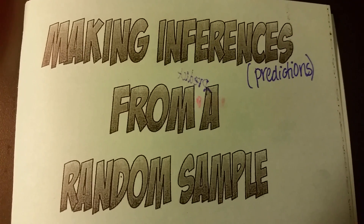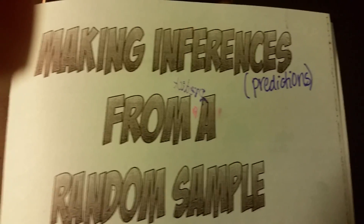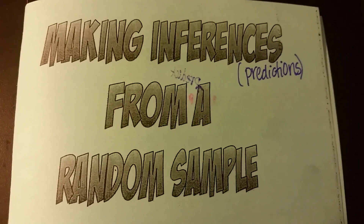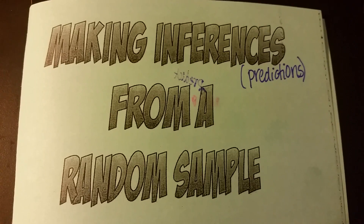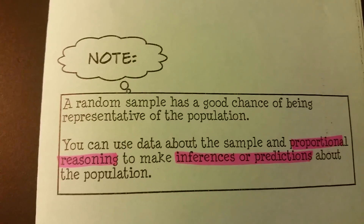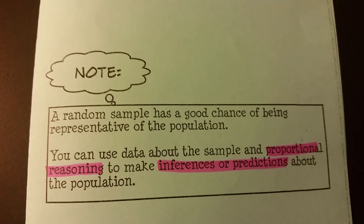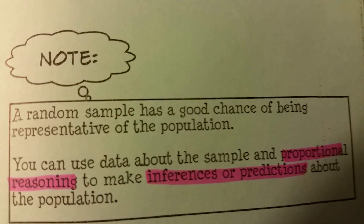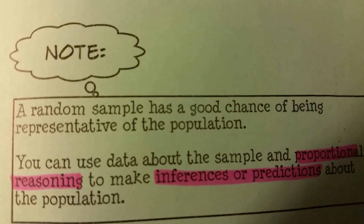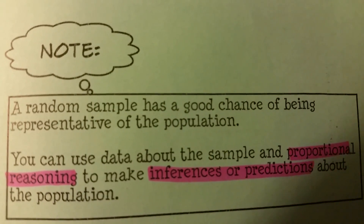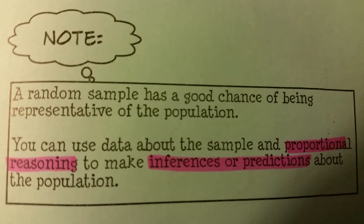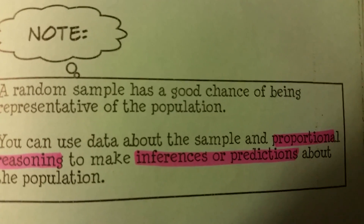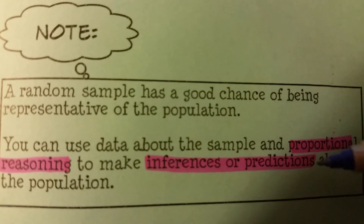Today we're talking about making inferences from a random sample. Inferences are just predictions — you've heard that in your reading language arts class. A random sample has a good chance of being representative of the population, giving everybody that chance. You can use data from the sample and proportional reasoning to make inferences or predictions about the population. That proportional relationship means we're going to set up a proportion in order to solve the problem.